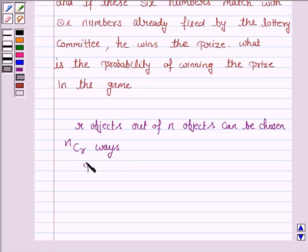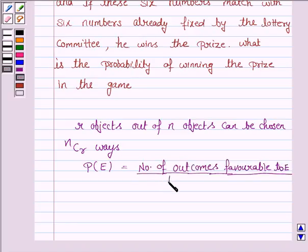And we also need to know the probability of any event E, which is given by the number of favorable outcomes to E upon the total number of outcomes. This knowledge will work as key idea.